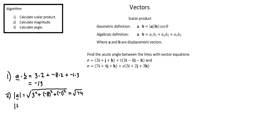The magnitude of the direction vector of the second line equation is again the square root of the sum of the squares of the x, y, and z values. x is 2 squared, plus y is 2 squared, plus z is 3 squared. This simplifies to the square root of 17.